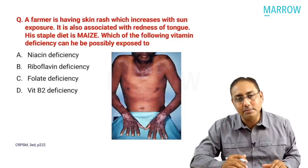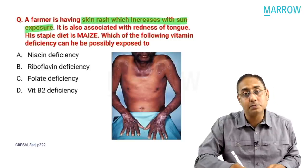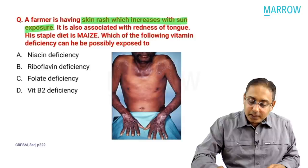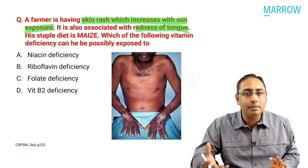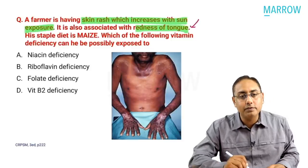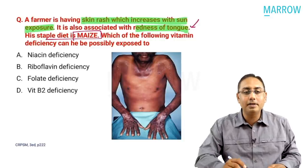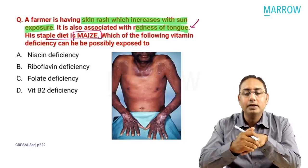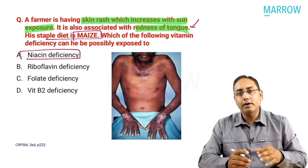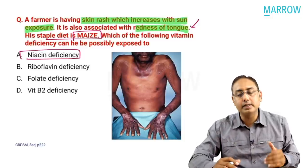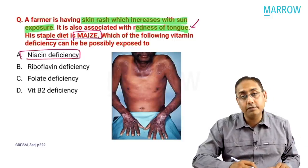Next MCQ: a farmer has a skin rash that increases with sun exposure - photosensitivity rash - associated with redness of the tongue (glossitis), and his staple diet is maize. Which vitamin deficiency is this? We just discussed this - it is niacin deficiency causing pellagra. There is exfoliative dermatitis on sun-exposed areas, history of dementia, history of diarrhea, and potentially death if untreated. The staple diet of maize is the key indicator.